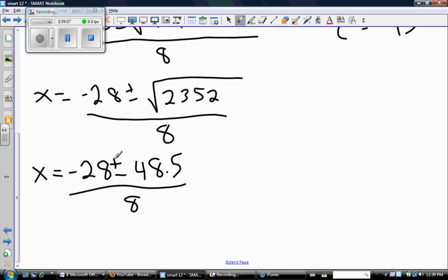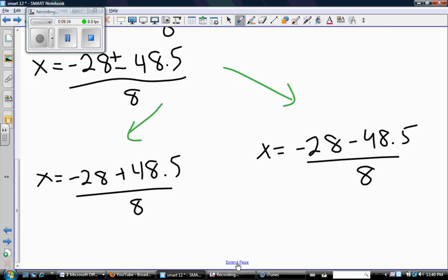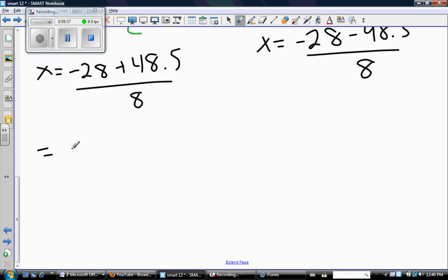So at this point, the only thing left to do is to take the plus and minus and separate into two different answers. So I'll put one answer over here. And I'll put one answer over here. So we have x equals negative 28 plus 48.5 divided by 8. And x equals negative 28 minus 48.5 divided by 8. Okay. So in your calculator, what do we get? So negative 28 plus 48.5 divided by 8. So I get 2.56 as one answer. And then the other answer for x is negative 9.56.